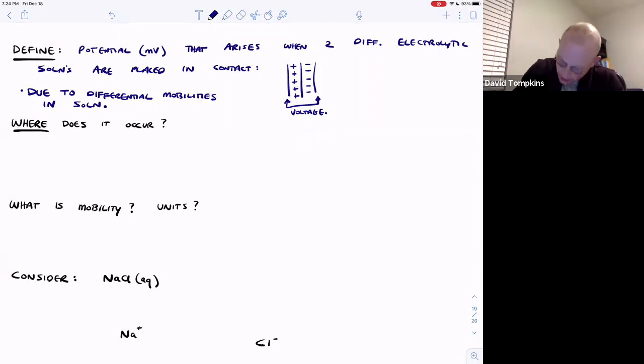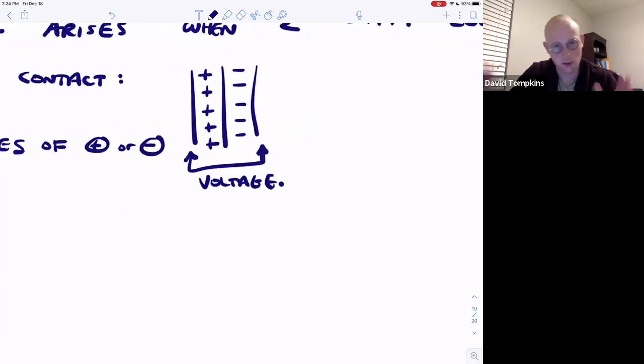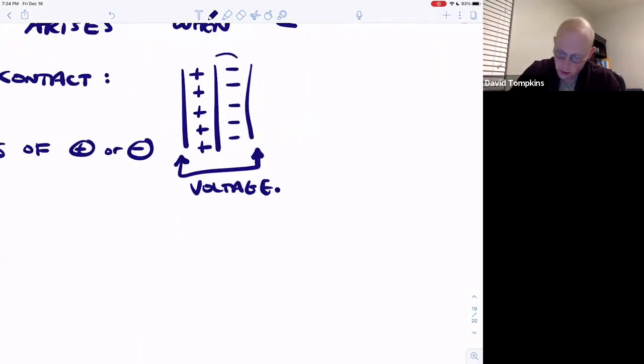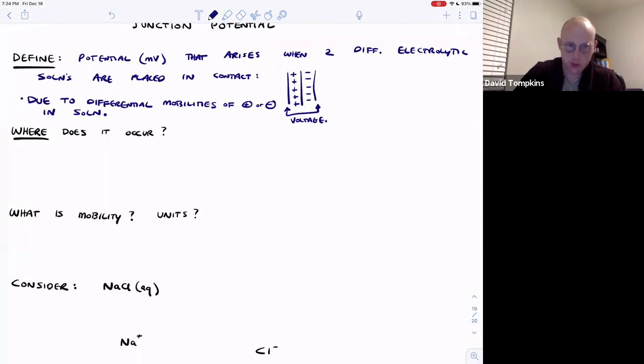So sometimes you'll have the cations traveling faster, other times the anions migrate faster, but whenever they are dissimilar or not equal, then you'll get a charge separation and this charge separation is going to occur at either end of the salt bridge that's connecting the two dissimilar electrolytic solutions.